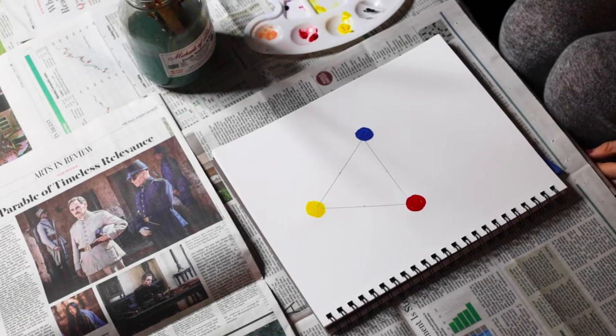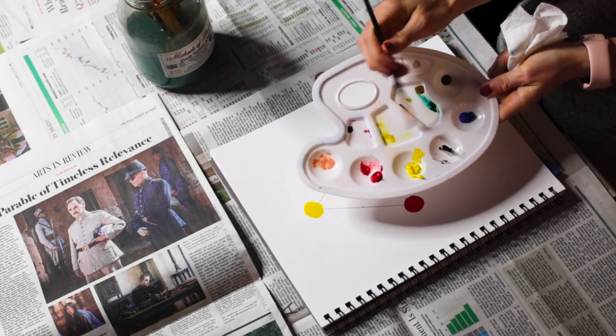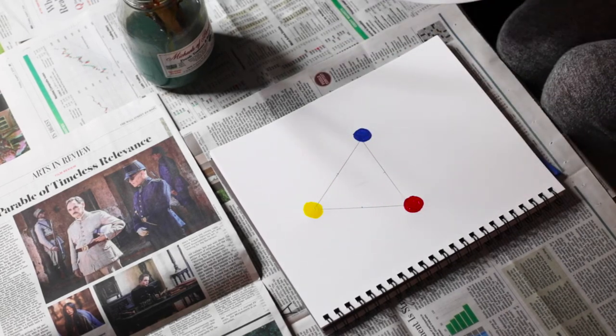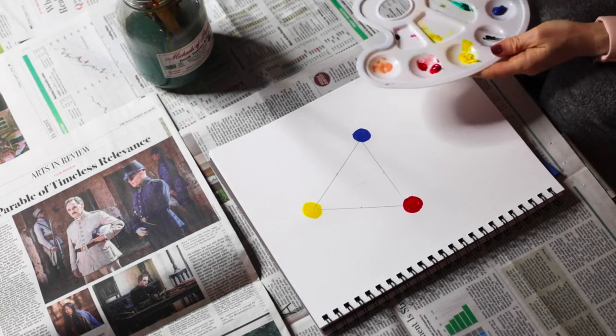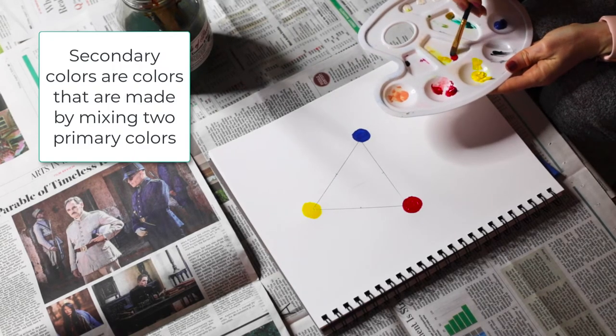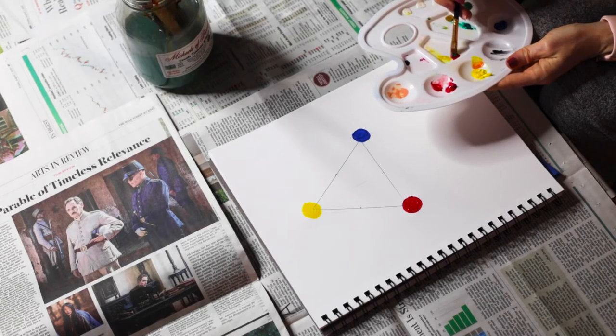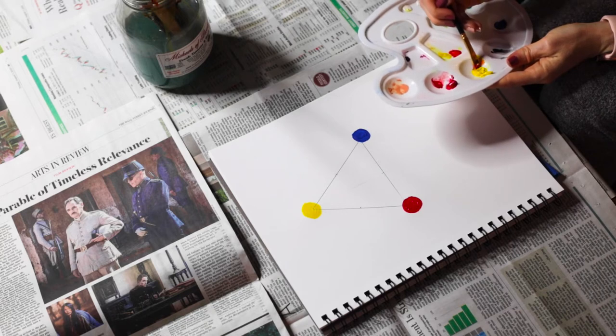So now that we have these three primary colors down, we can start working on something called a secondary color. Now you can see me here kind of gesturing over mixing these primary colors, but basically to get something called secondary colors, you have to mix primary colors. So whenever we mix two primary colors together, it creates a secondary color.